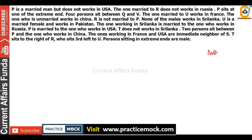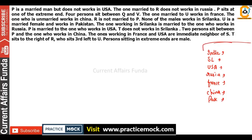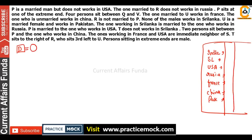I will fix the country here. The countries are: India, Sri Lanka, USA, Russia, France, China and Pakistan — 7 countries total. We will list them. P is a married man, meaning his wife is here, but he does not work in USA — so P doesn't work in USA.